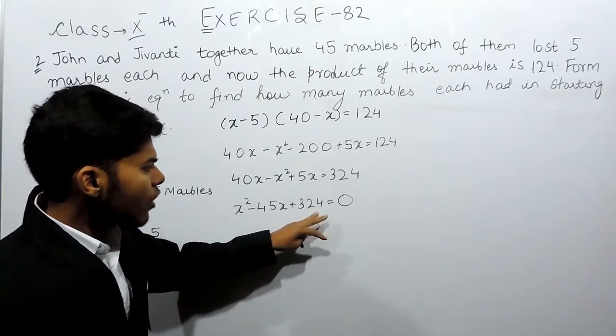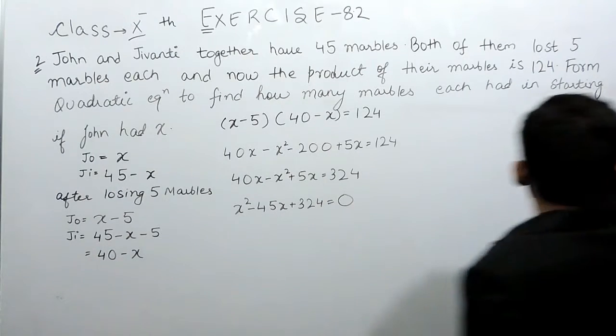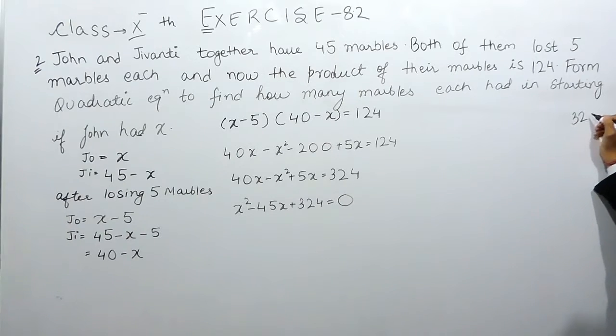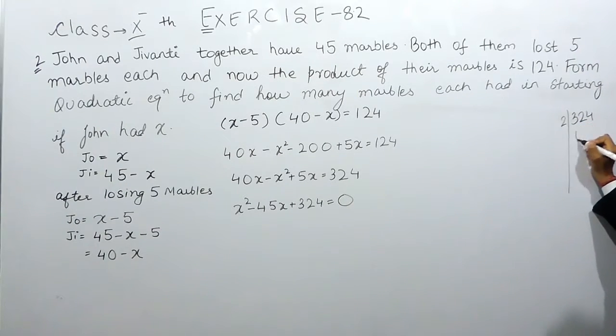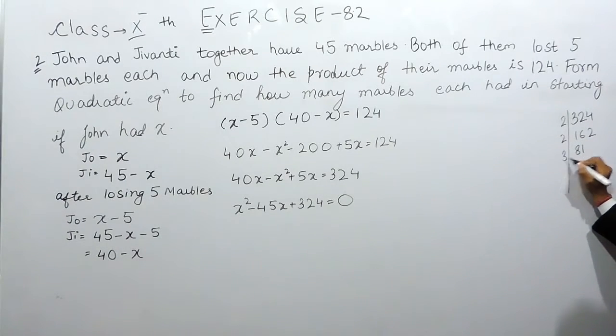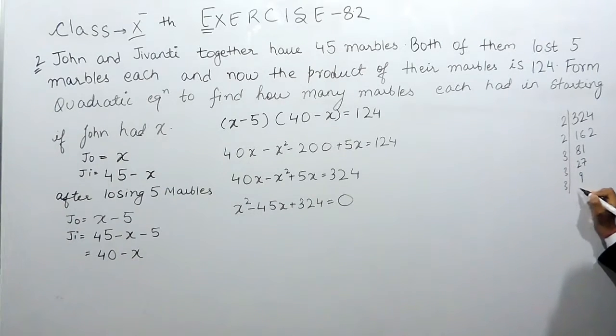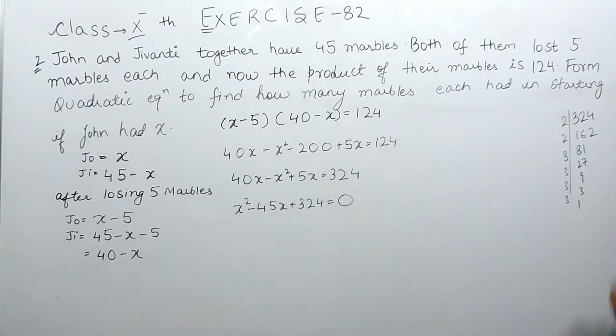We will do the factorization of 324. So 324, 162, 81, 27, 9, 3, 1.